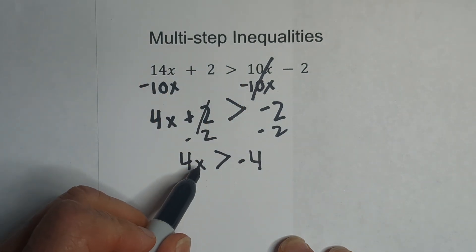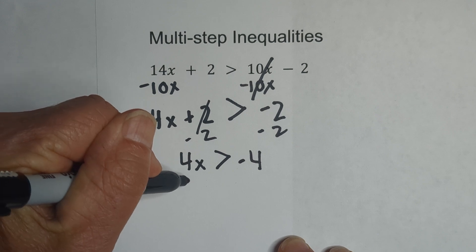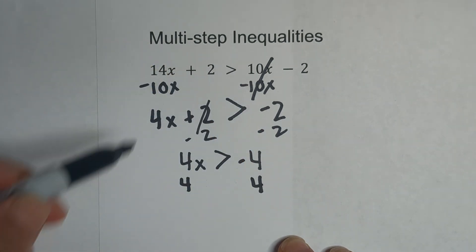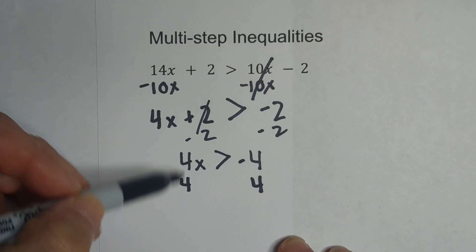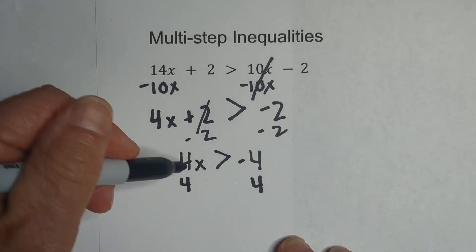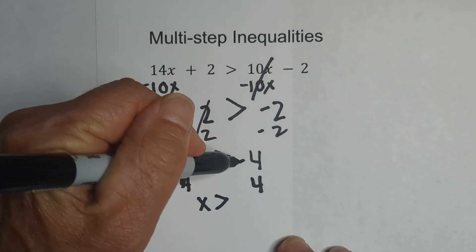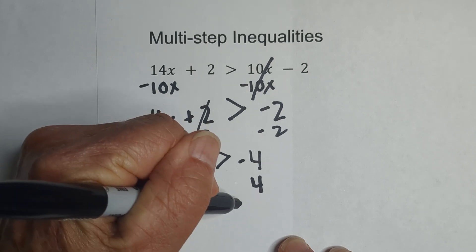I'm now going to isolate the x by dividing both sides by 4. Now, since this is a positive, we do not have to flip the sign. These cancel, so you have x is greater than negative 4 divided by 4 is negative 1.